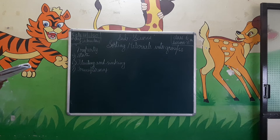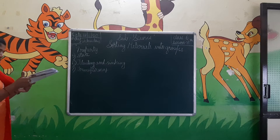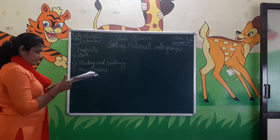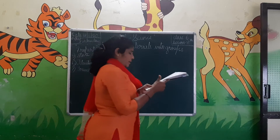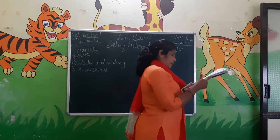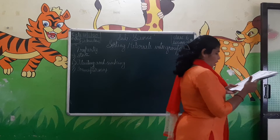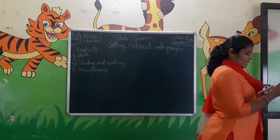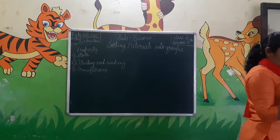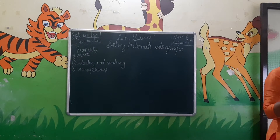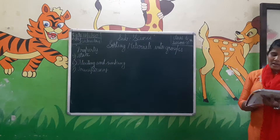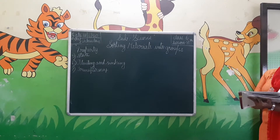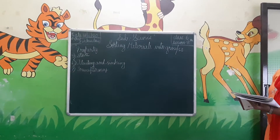Butter paper is a translucent material. Other examples of translucent materials are frosted glass, tissue paper, dusty glass, and fog and mist. These are the examples of translucent materials.